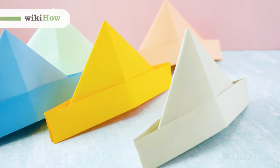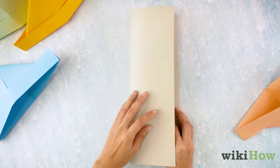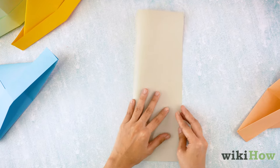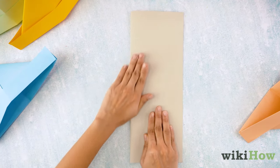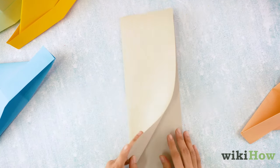To make a paper hat, first fold an 8 by 11 inch (20 to 28 centimeter) piece of paper in half lengthwise and unfold.